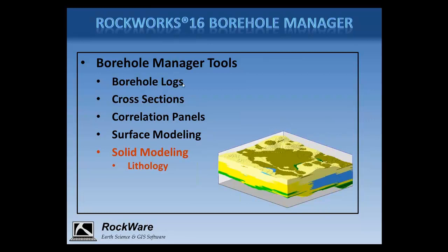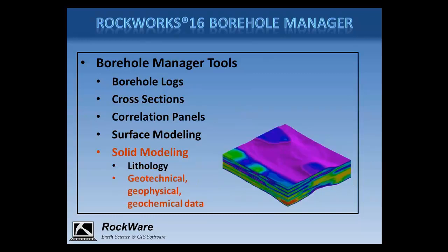Numeric data you've recorded downhole, such as penetrometer data, e-log data, concentration values, and more, can be interpolated into a solid model, which can be viewed in 3D as voxel diagrams, as isosurfaces or skins, as 3D fences, and as 2D cross-sections. Here, for example, is a fence diagram representing a soil compaction model.